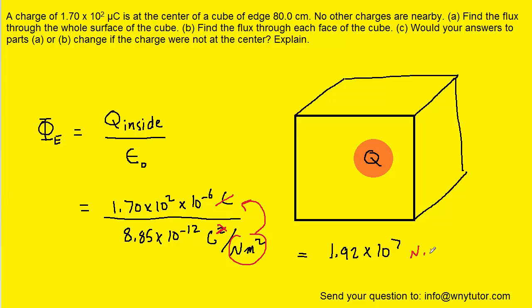Then the newton meter squared are actually going to come up to the numerator. So we'll have newton meter squared per coulombs. That's the standard unit of electric flux. This would be the correct answer to part A.